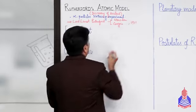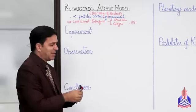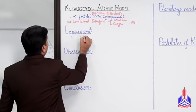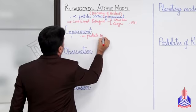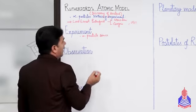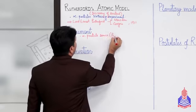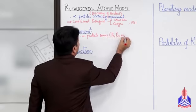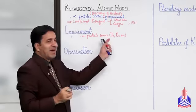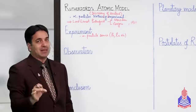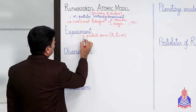اس experiment کے لیے ہمیں کیا چاہیے؟ پہلی چیز ہمیں alpha particle source چاہیے، یعنی ایسا source جو alpha particle دے۔ آپ polonium لے سکتے ہیں یا radium لے سکتے ہیں۔ یہ different radioactive metals ہیں جو alpha particle emit کرتی ہیں۔ دوسری چیز ہمیں lead block چاہیے۔